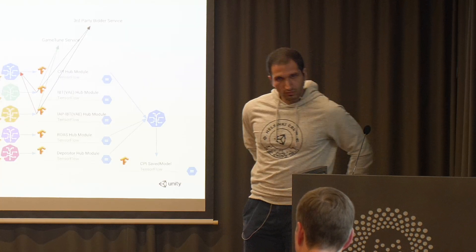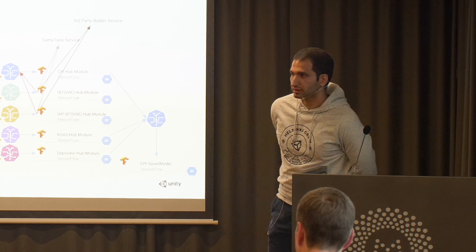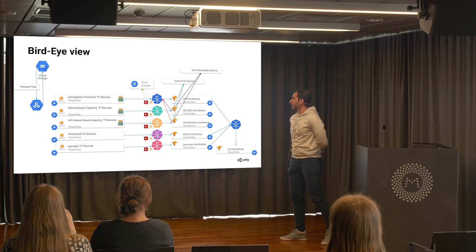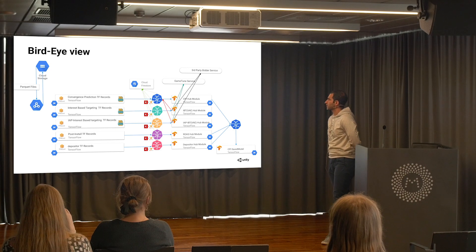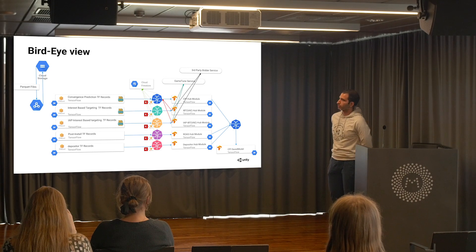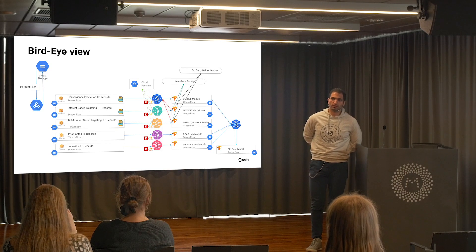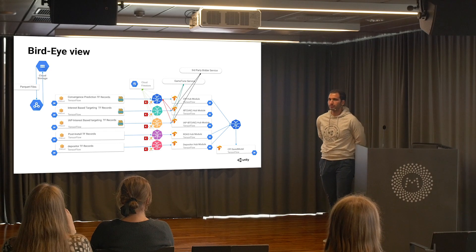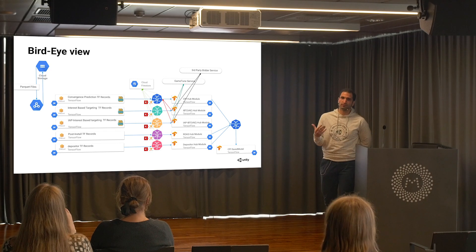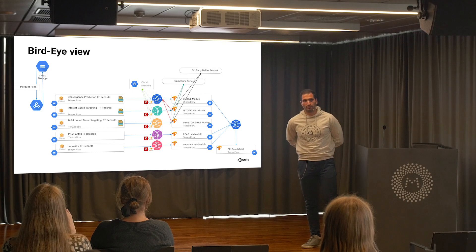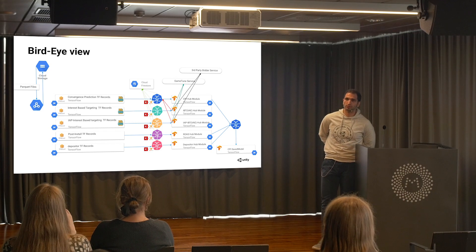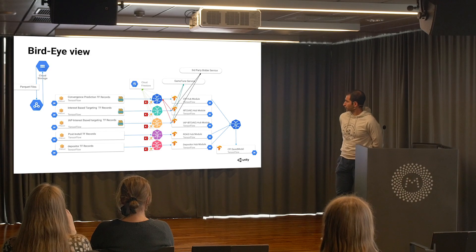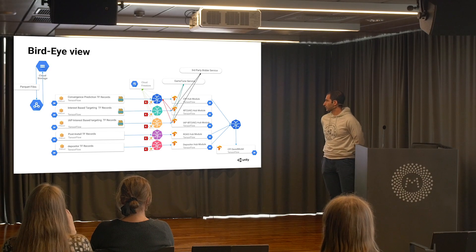What is our system and how does it work right now? We have all our data in Parquet files stored in Google Cloud Storage. Then we have Dataproc clusters orchestrated by Airflow that consume that data and generate TF records, which can be consumed quickly by our neural network training jobs. Those neural network training jobs are orchestrated using Kubeflow.